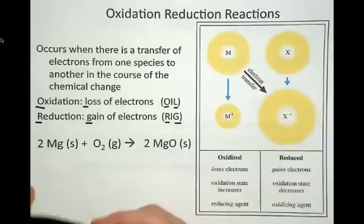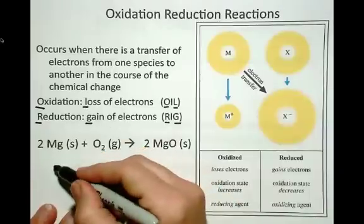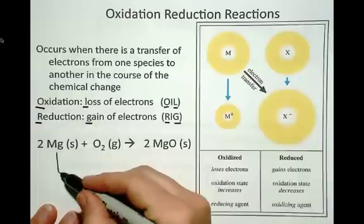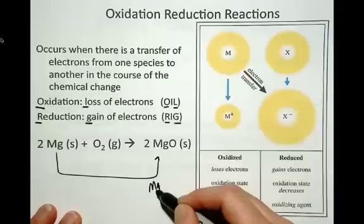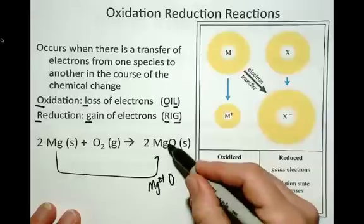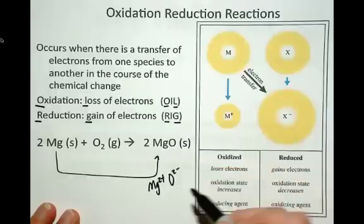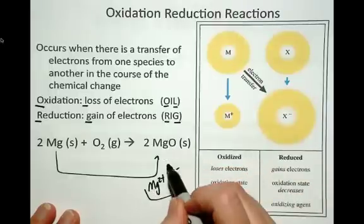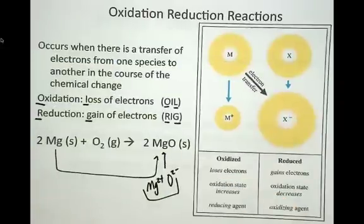and I know because this is in group 2, it's going to form a cation with a +2 charge. So I know that magnesium really has a +2 charge and the oxygen really has a -2 charge in this compound. Together, they make this neutral ionic compound, magnesium oxide.